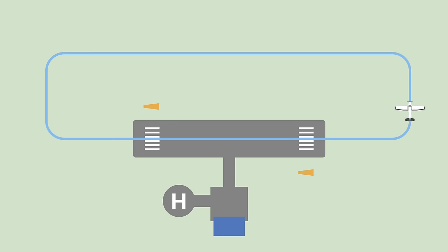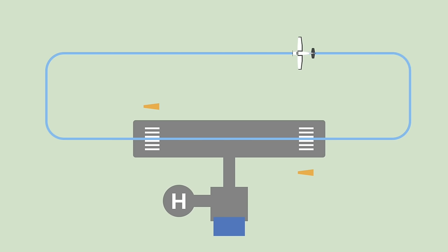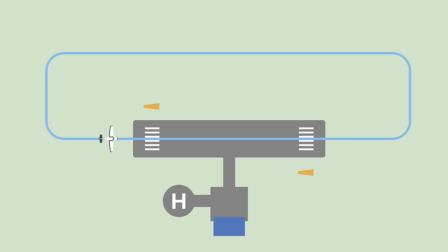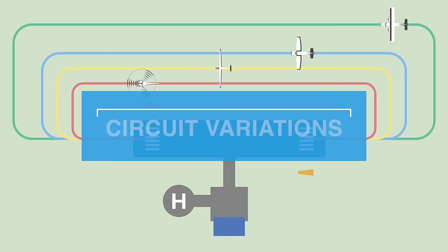The downwind leg is flown at a thousand feet and parallel to the runway. Base is turned at 45 degrees to the threshold; the aircraft is slowed and descended to no lower than 500 feet, and on final the aircraft is flown to the landing point. Not all aerodromes in the country fly the standard circuit procedure.